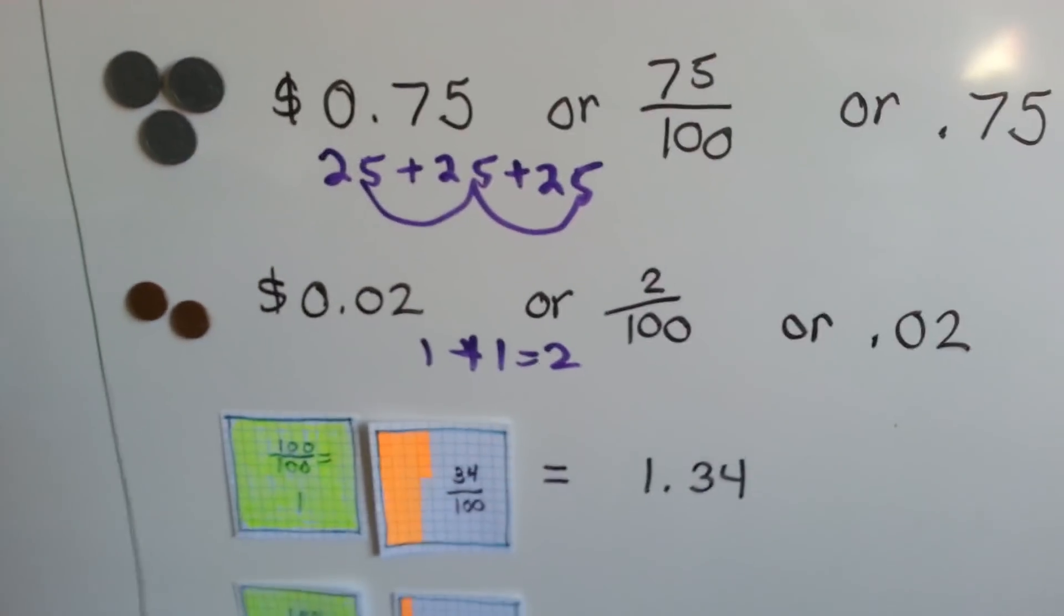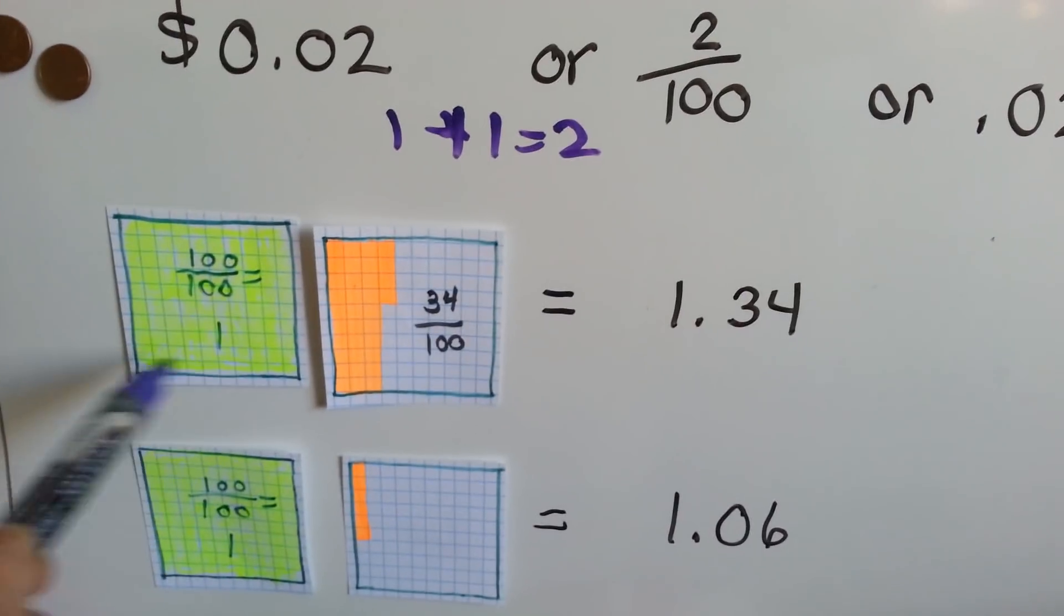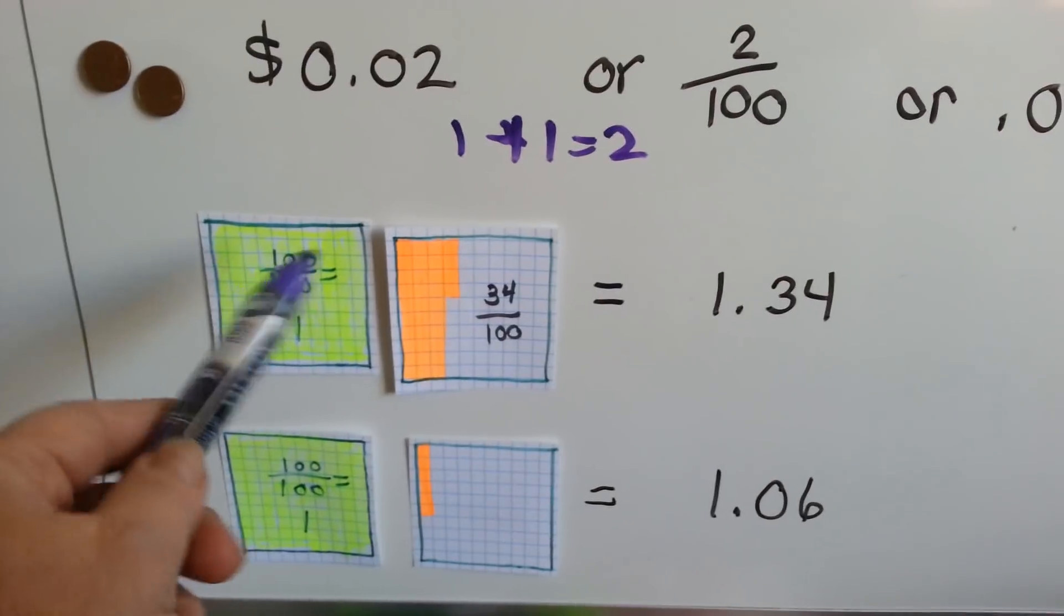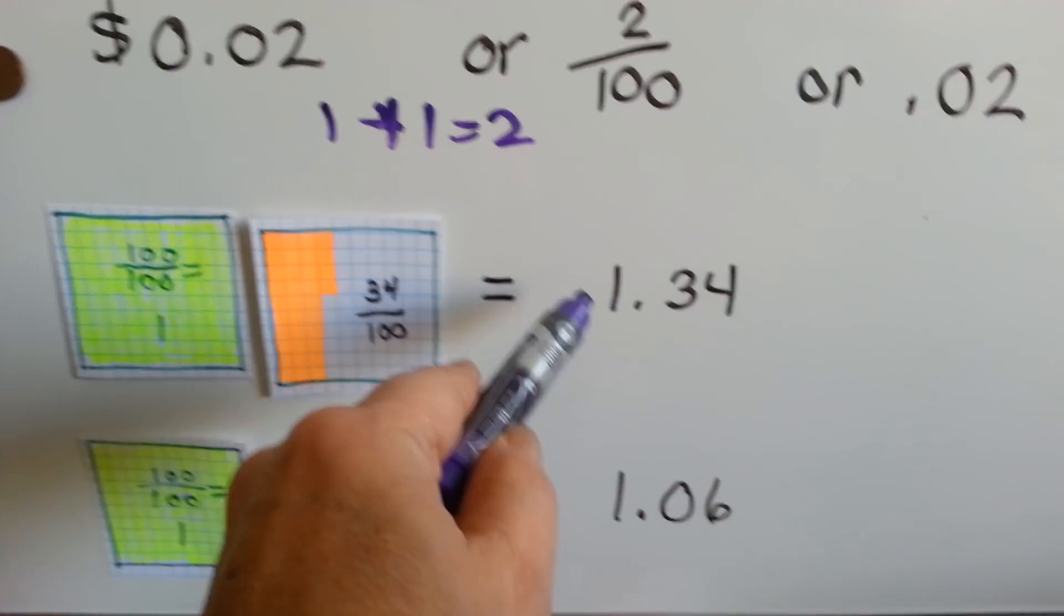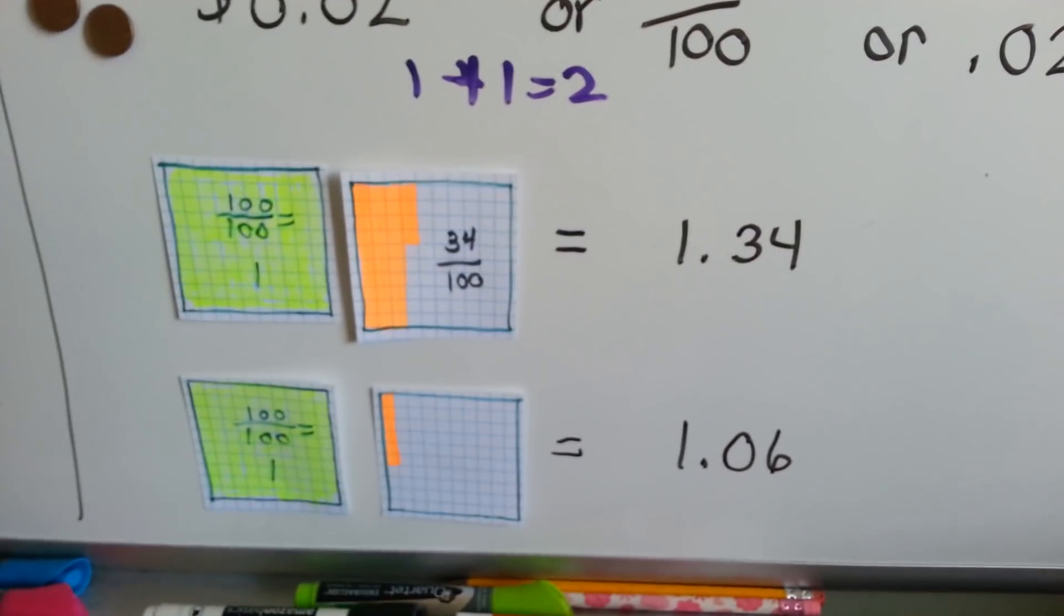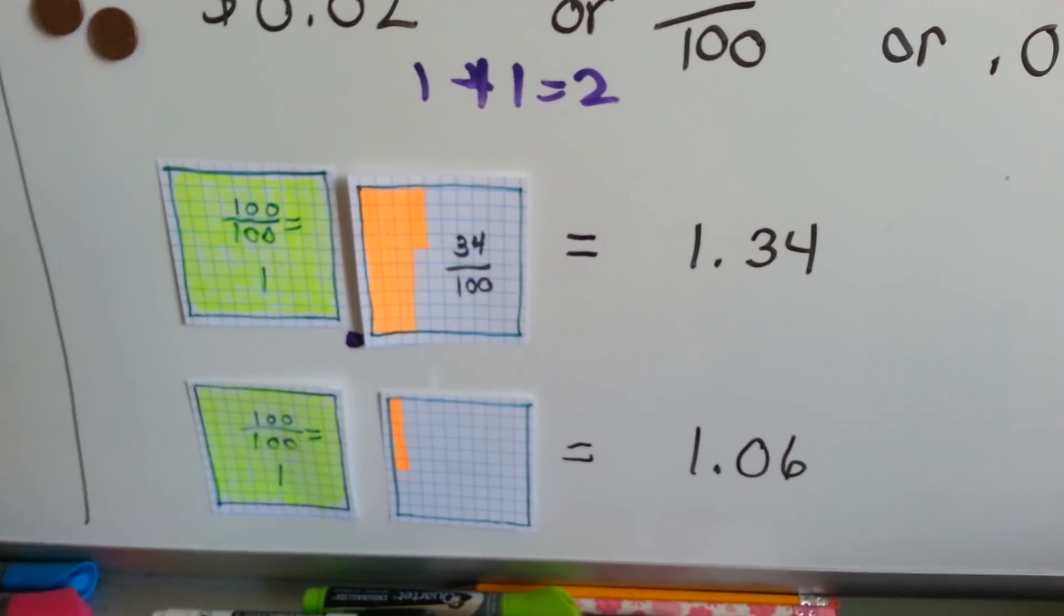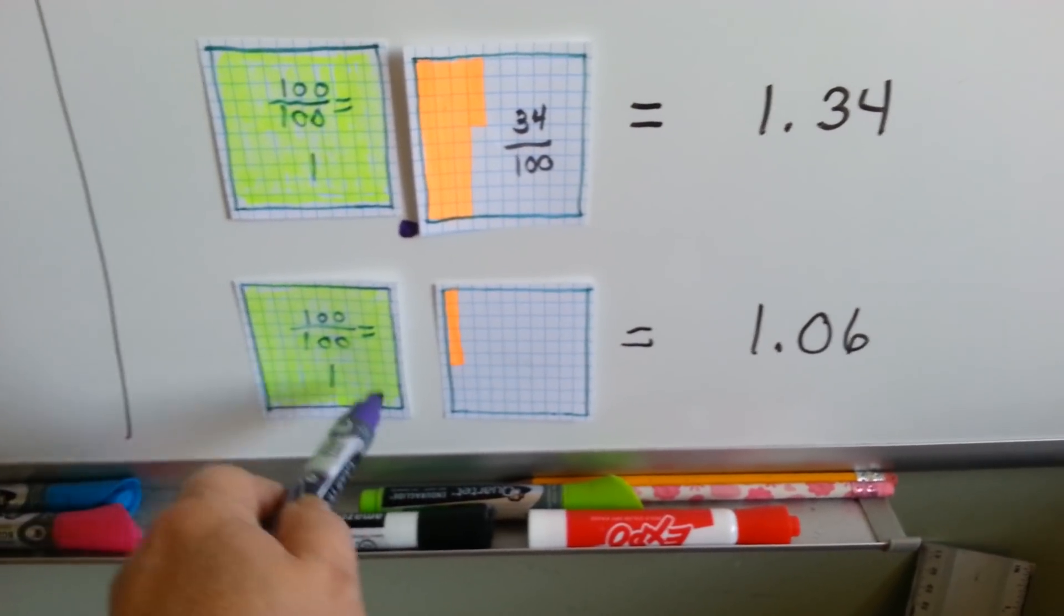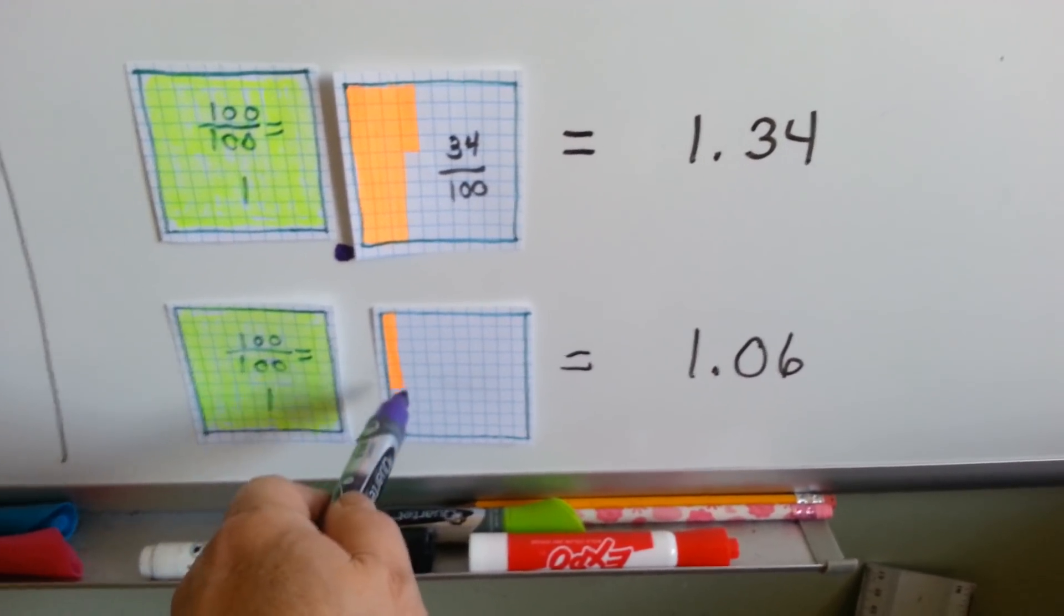Now, not talking about money, just talking about regular decimals. If we had 100 of 100 parts, we would have a whole one. And then if we had 34 out of 100 parts, we would have 1 and 34 hundredths. See that? The decimal point would actually go like right there. For this one, we've got 100 out of 100 parts, so we've got a whole one.